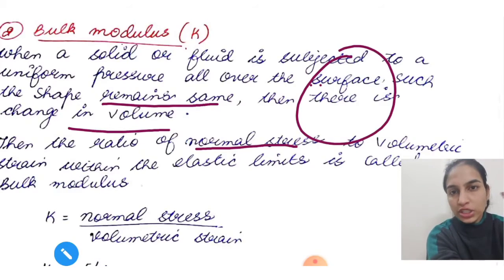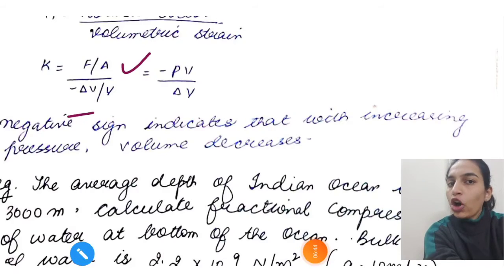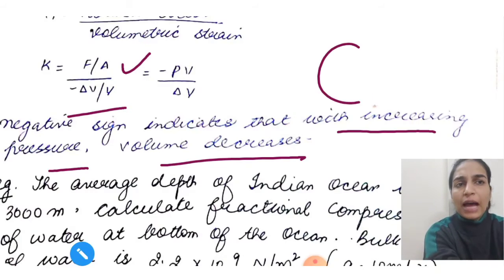How do we define it? Ratio of normal stress to volumetric strain. In bulk modulus, the stress or pressure applied is always normal to the surface. So normal stress upon volumetric strain. That's F by A, and the change will be in volume, so delta V by V. The negative sign indicates that with increasing pressure, volume decreases. If you apply force on a balloon filled with water, obviously the volume will decrease. Whenever you apply pressure on anything, volume decreases, that's why negative sign is there.